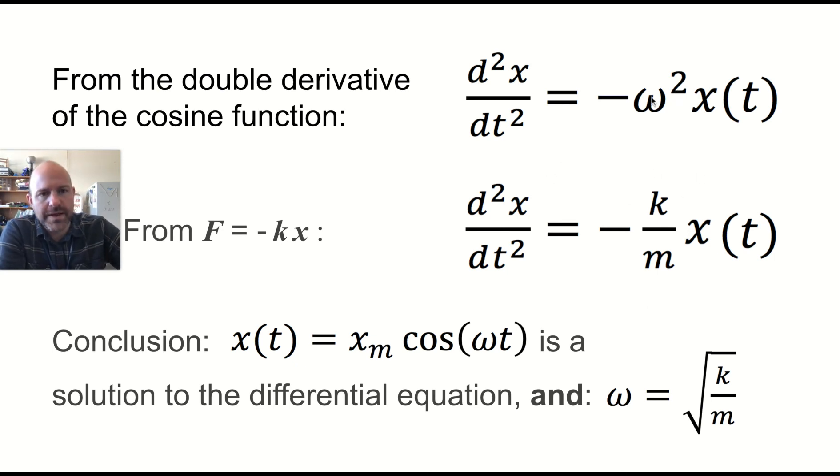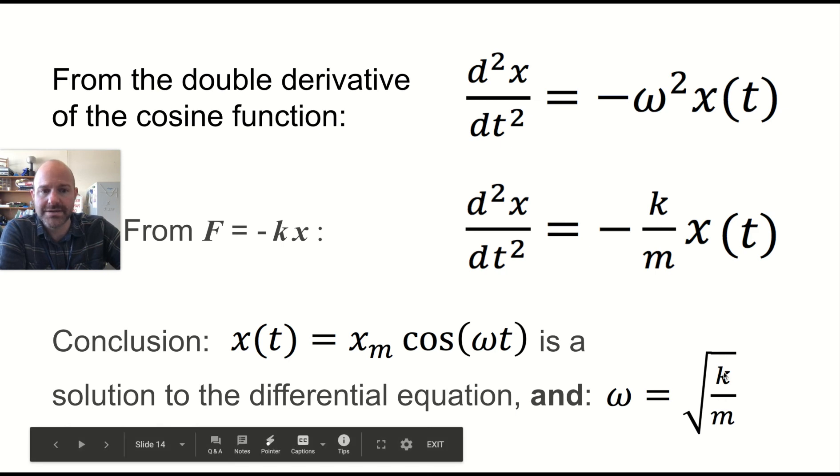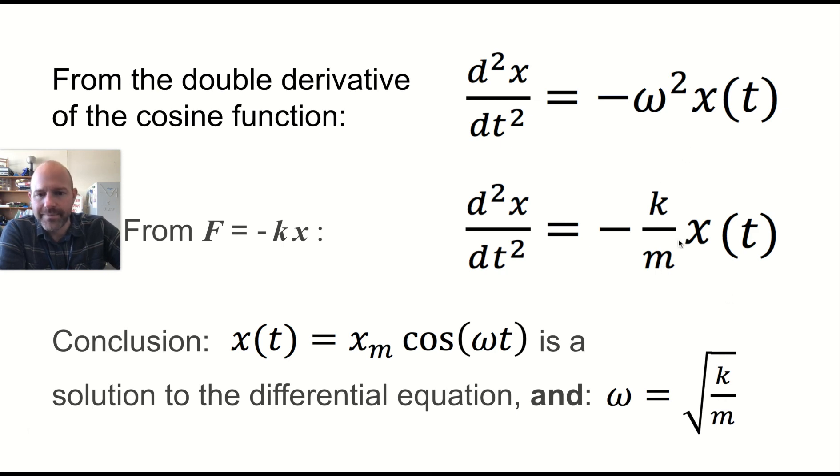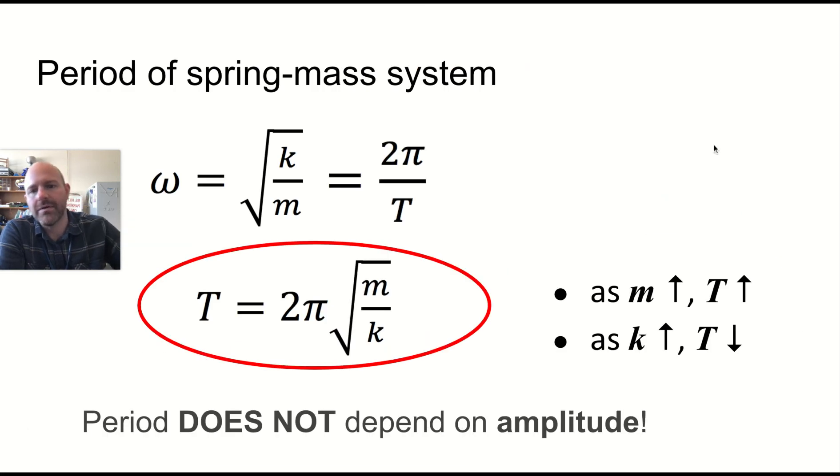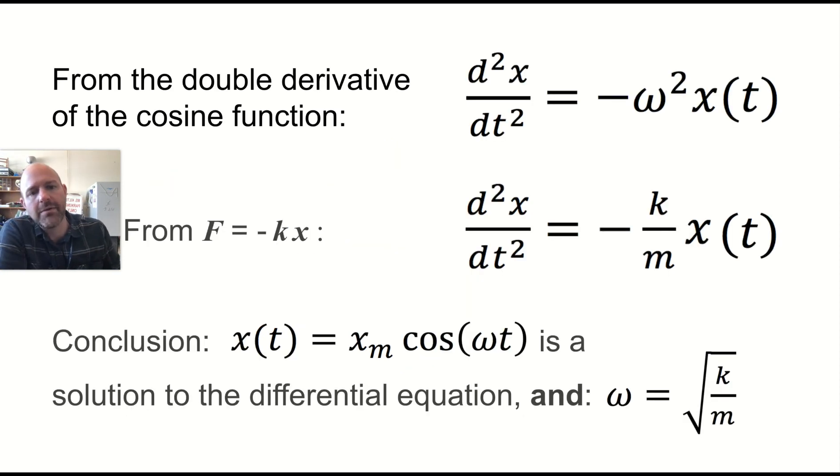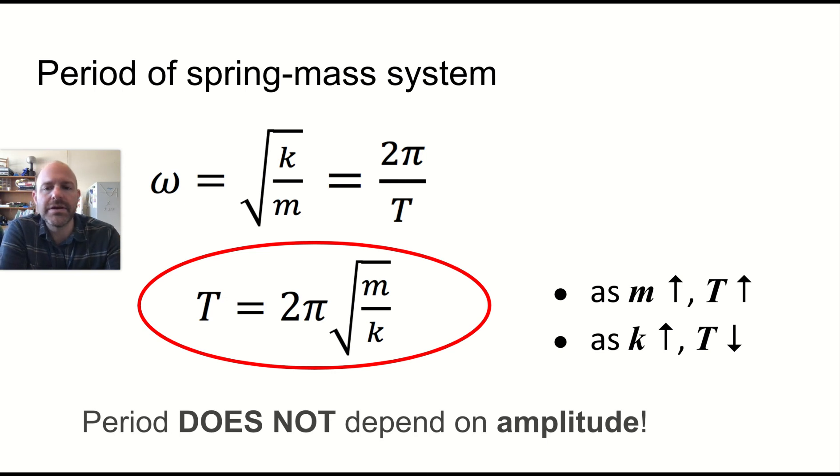And if this is true, then omega squared is just K over M. And so what is omega? The square root of K over M, which should relate then to the period. And if we know the angular frequency, then we can use the fact that the angular frequency, the period, and the frequency are all related. So the period is 2 pi times the square root of M over K.